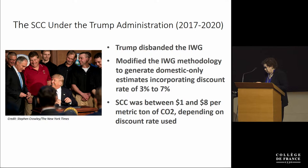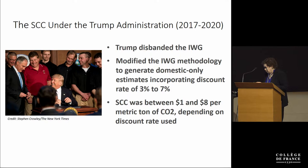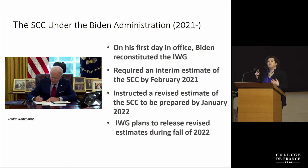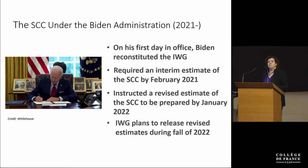However, as soon as Biden became president, the IWG was reconstituted. The graph you just saw shows the interim estimates issued by the government in February of 2021, and a new set of distributions was to be prepared by January of this year. Various things have happened, and it's likely that revised estimates will be released sometime in the fall of this year.